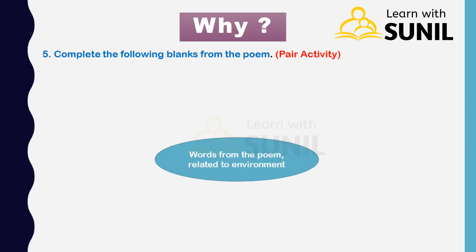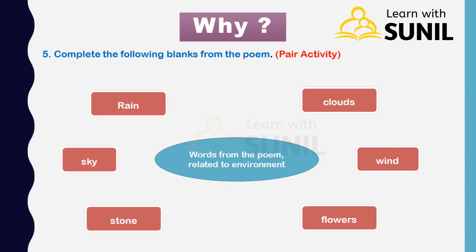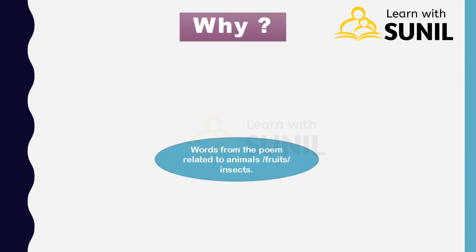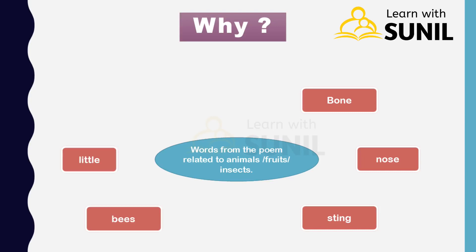Words from the poem related to environment: clouds, wind, flowers, stone, sky, rain. Words from the poem related to animals, fruits, and insects: bone, nose, sting, beads, little spiders.